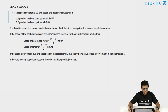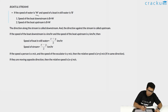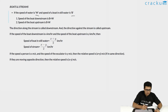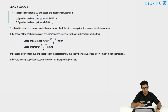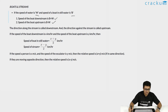Let's start with the formula. Boats and streams are basically anything with two speeds where you have to calculate the relative speed. Let's say the speed of water is W and the speed of the boat in still water is B. The speed of the boat downstream will be B plus W, and the speed of the boat upstream will be B minus W. That's because when the boat is moving in the direction of the water, the speed of the water will aid the speed of the boat. Direction along the stream is called downstream and the direction against the stream is called upstream.